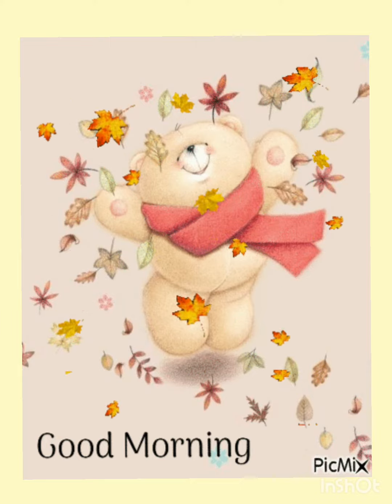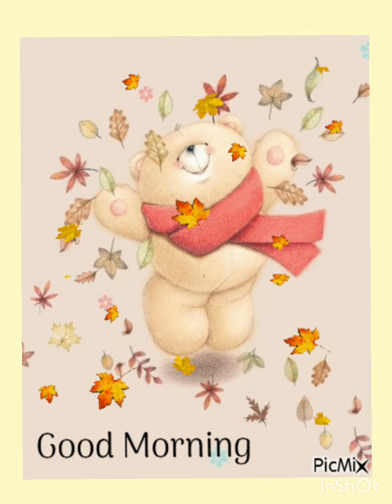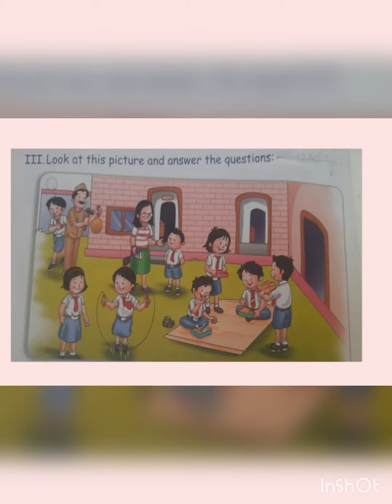See the picture and give answers to the given questions. Unit 17, third part — look at this picture and answer the questions. We have one picture here, and in this picture, recess time is going on. The peon is ringing the bell and the teacher is standing with a book. Some students are playing, some are having their lunch. Based upon these activities, we have some questions and now we will solve them.